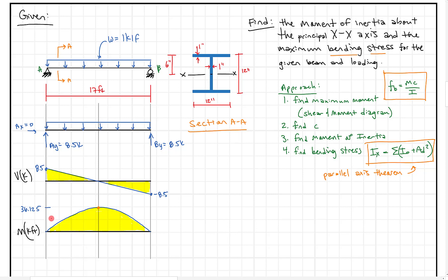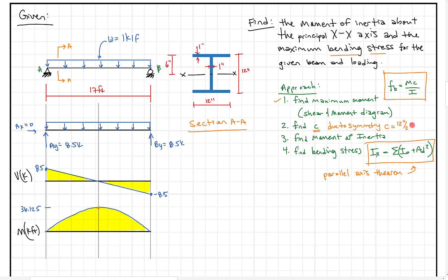We also know that C is going to be easy in this case. The maximum moment was found from the shear moment diagram, and C is easy because this section is symmetric about the principal axis. Whenever a section is symmetrical about the principal X-X axis, the distance C to the maximum bending stress is always going to be the height divided by two. Due to symmetry, C equals 12 inches over two, which is six inches.